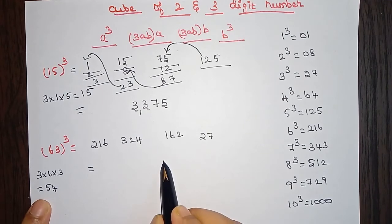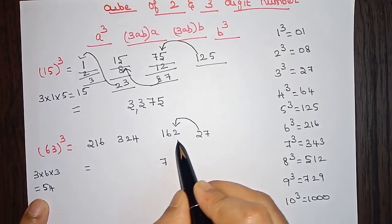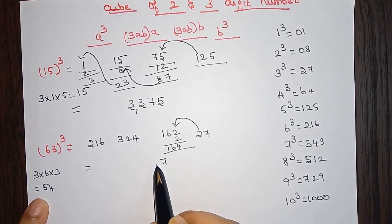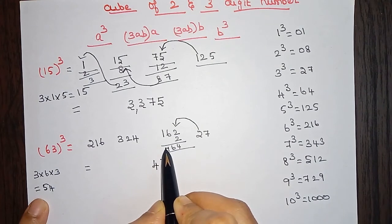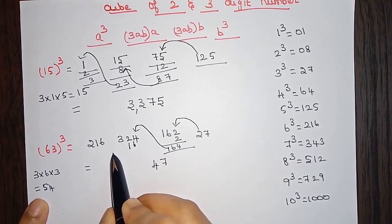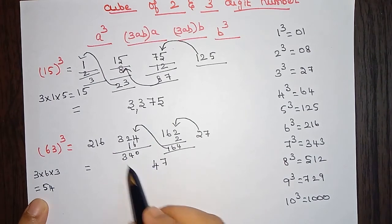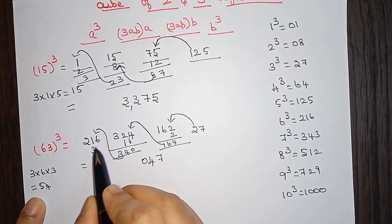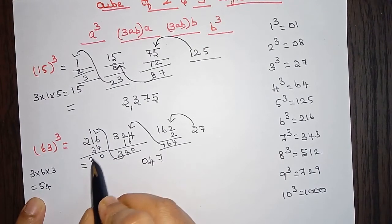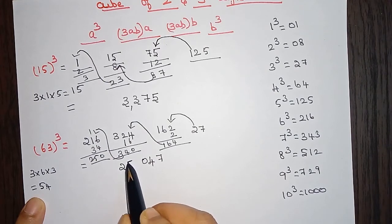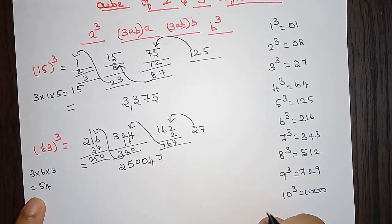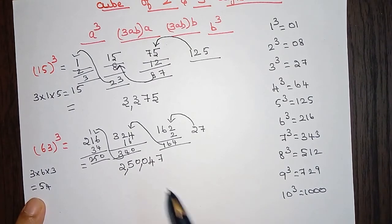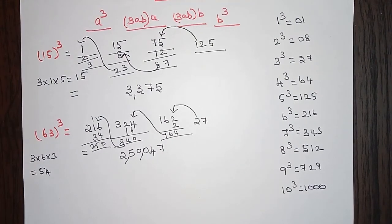Now adding from right to left: take 7 from 27, carry 2. Adding 2 to 162 gives 164 — take 4, carry 16. Adding 16 to 324 gives 340 — take 0, carry 34. Adding 34 to 216 gives 250. Taking all these digits together, the cube of 63 is 250,047.